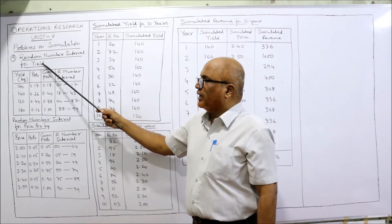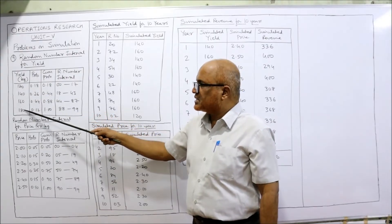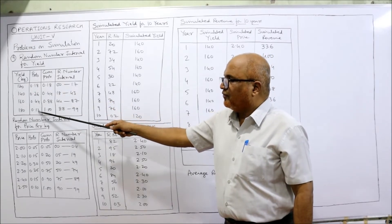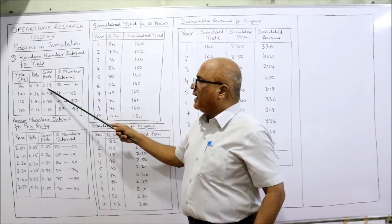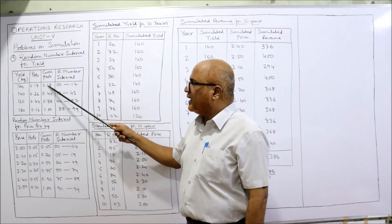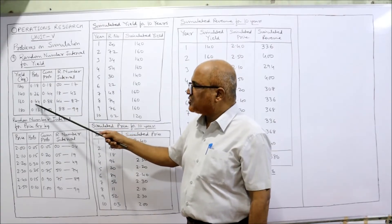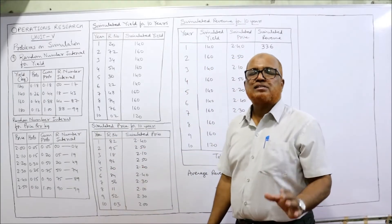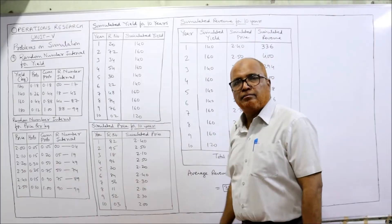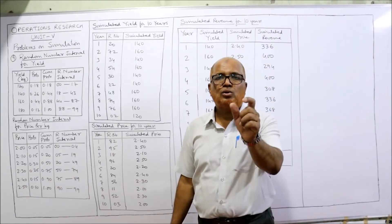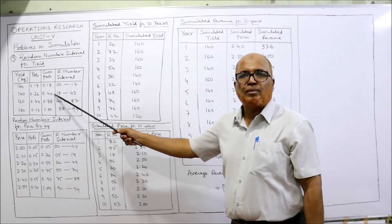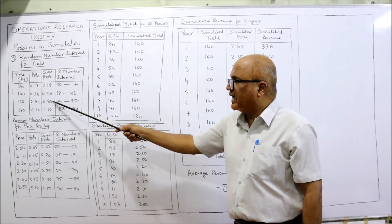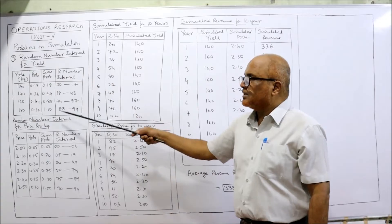First, we do the random number coding for yield. The yields are 120, 140, 160, and 180, with probabilities 0.18, 0.26, 0.44, and 0.12. The cumulative probabilities are 0.18, 0.44, 0.88, and 1.00. The random number intervals are: 00–17 for yield 120, 18–43 for yield 140, 44–87 for yield 160, and 88–99 for yield 180.